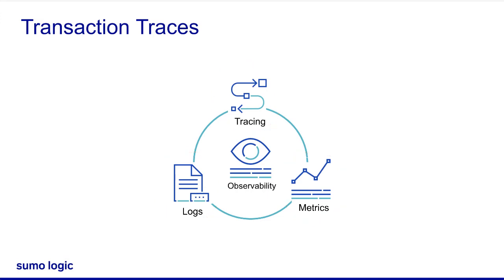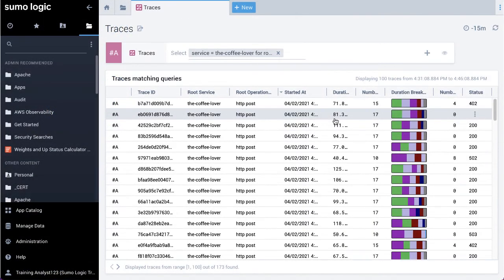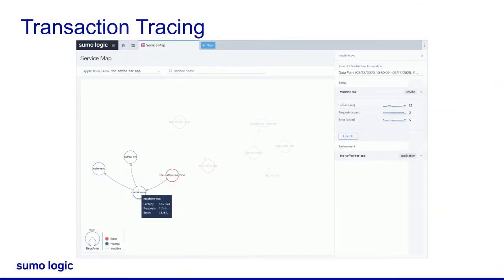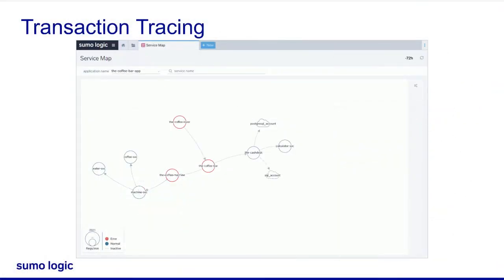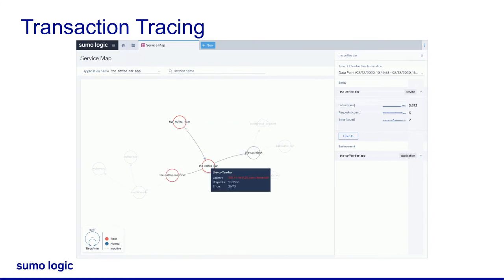Got it. Can you give an example? Tracing tracks a transaction, such as a login or checkout request from a user, throughout an entire application. Let's take the coffee ordering app for example. Each of the transactions in the app generate an individual trace. Each trace not only explains how long it took to complete, but also how these requests traveled through the application infrastructure and where the bottlenecks are.